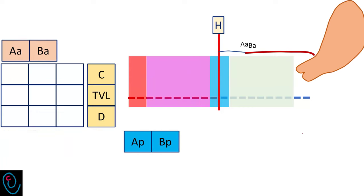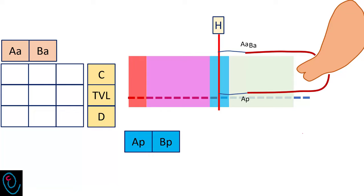Moving to the posterior compartment assessment, it is assessed in the same way as the anterior compartment. The first 3 cm are assessed by point A posterior, while the remaining part on the posterior vaginal wall is assessed by point B posterior.